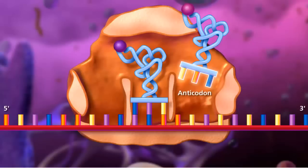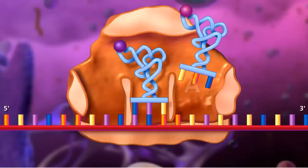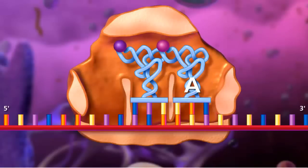Each anticodon of a transfer RNA molecule corresponds to a particular amino acid. A charged transfer RNA molecule binds to the A site, and a peptide bond forms between its amino acid and the one attached to the transfer RNA molecule at the P site.